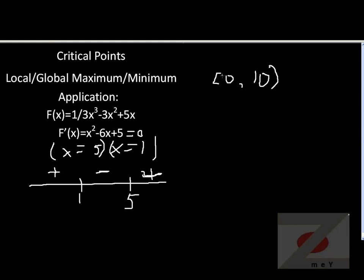The way to do it, you have to plug in all your endpoints and critical points into the original function and calculate its value. So let's just start. We have f of 0 would just be 0, because x cubed 0 cubed minus 3 times 0 squared plus 5 times 0 would be 0.